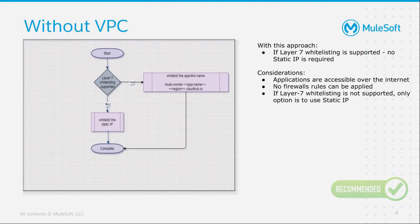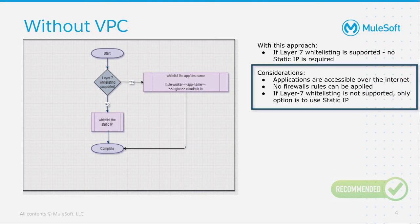If you do not have a VPC and Layer 7 whitelisting is supported, then you can still whitelist the application or the DNS name. What you need to consider with this approach is that applications are accessible over the internet and no firewall rules can be applied. If there is no Layer 7 whitelisting supported, then the only option left is to use the static IP.